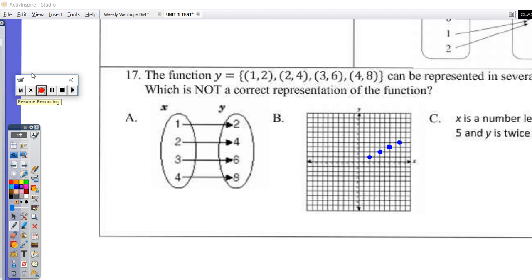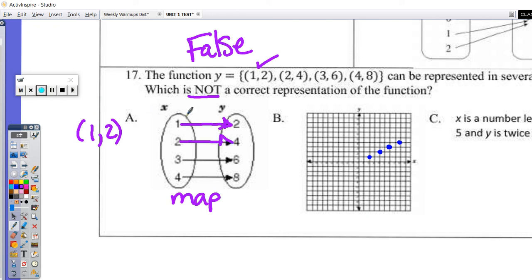Question 17. The function Y equals, they give me some coordinates, can be represented in several other ways, which is not, so we're looking for something that is false, which is not a correct representation of the function. Let's look at A. This is called a map, where it's mapping. What this means is an x-value of 1 goes with 2. So 1, 2. Yes, that's it. 2, 4. That worked. 3, 6, and 4, 8. This is true. We're looking for something that is false, so I'm going to cross out A.